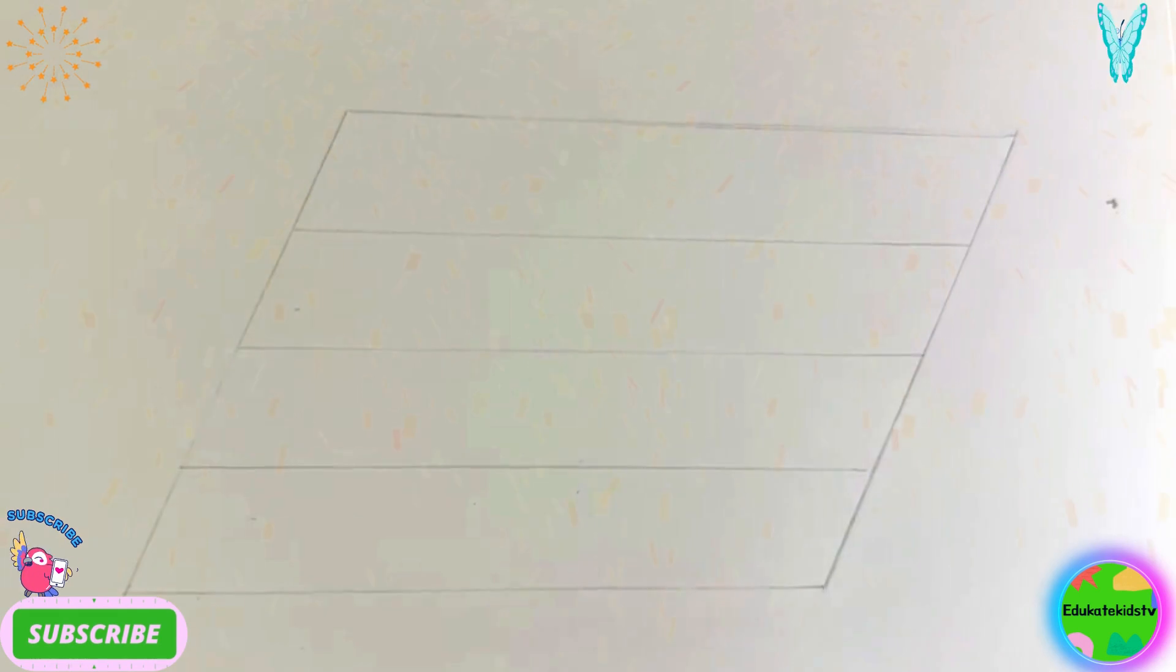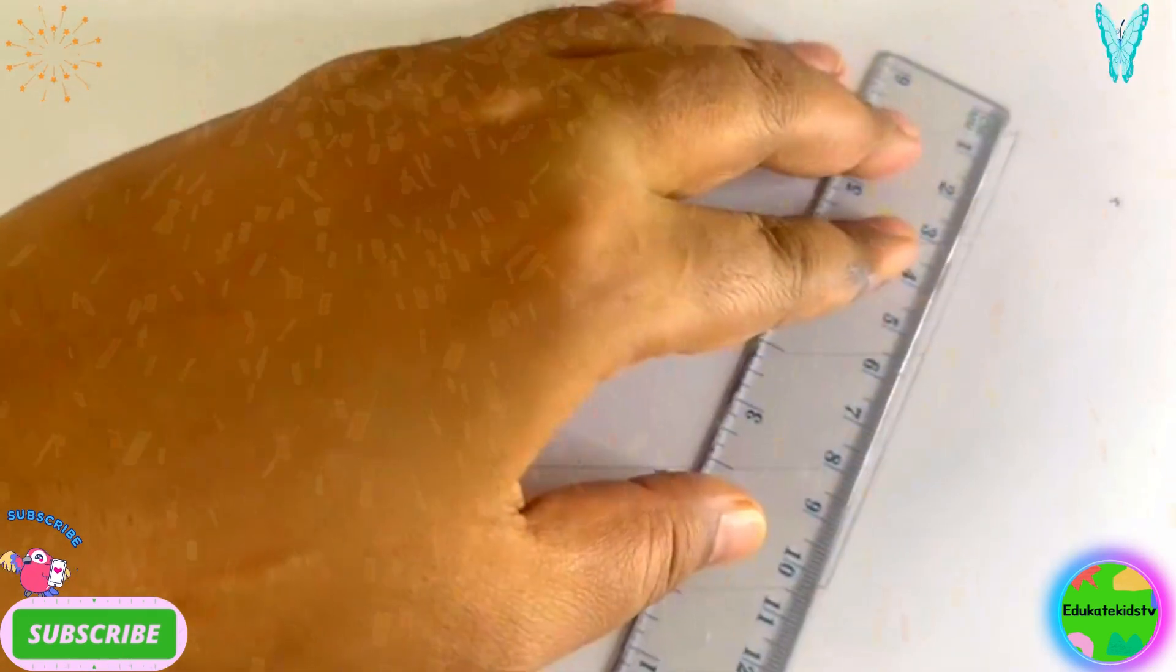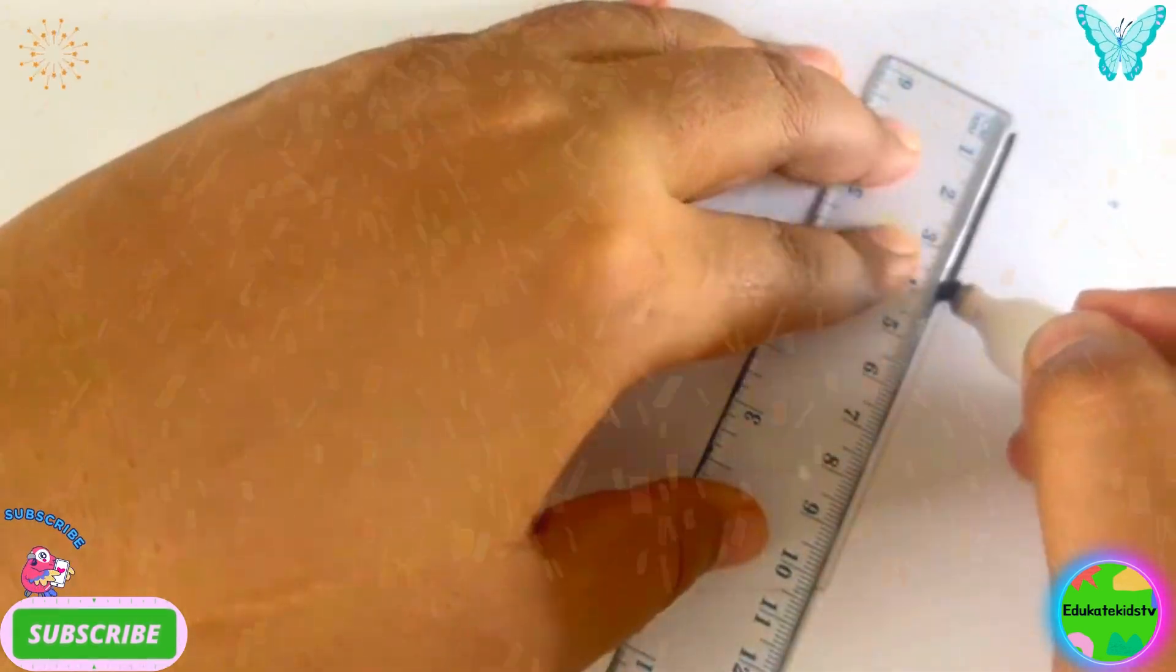Now here we have our parallelogram and we are going to make a tom poppet. Hooray! So let's start drawing with our black marker. Hooray!